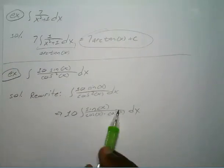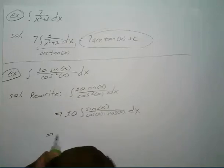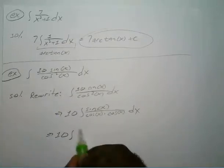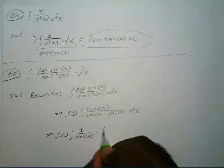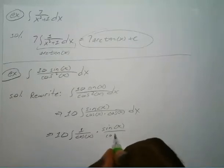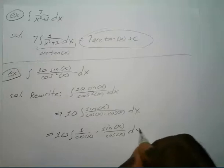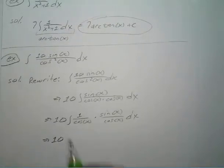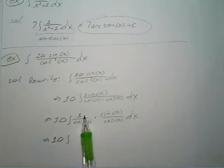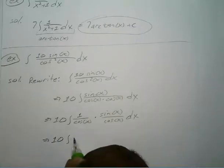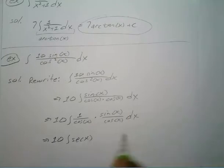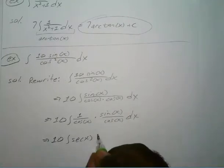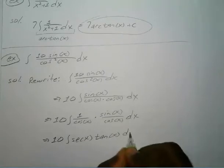Now we can go ahead and separate those, which gives us 10 times the integral of 1 over cosine of x times sine of x over cosine of x with respect to x. This helps us because 1 over cosine of x is secant, and sine over cosine of x is tangent. So we have 10 times the integral of secant of x times tangent of x with respect to x.